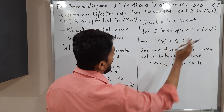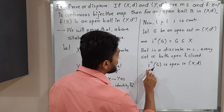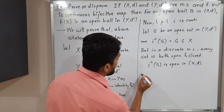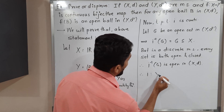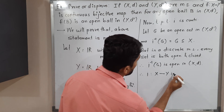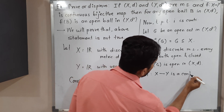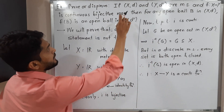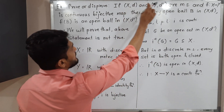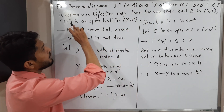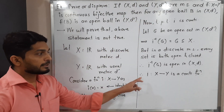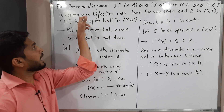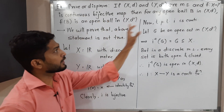We started with one open set in y and proved its inverse image is open in x. Therefore i from x to y is a continuous function. So we have taken two metric spaces xd and yd dash, considered a function f which is the identity i, and proved it is both bijective and continuous. Now we want a ball in xd.